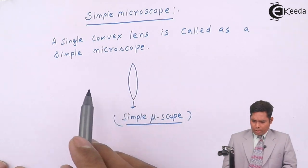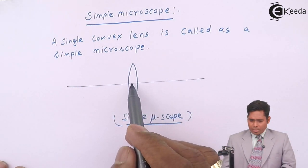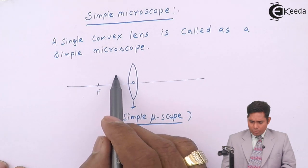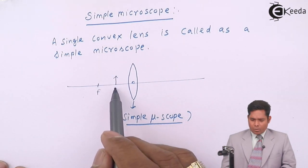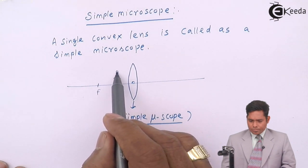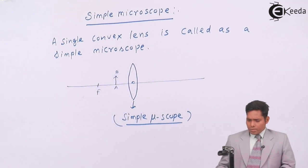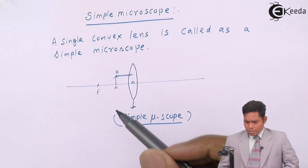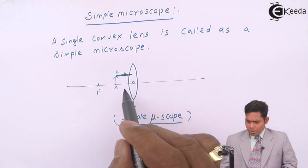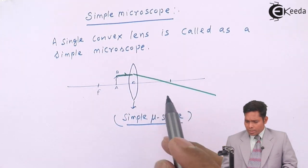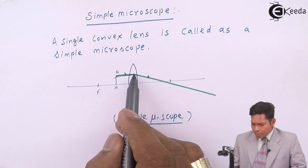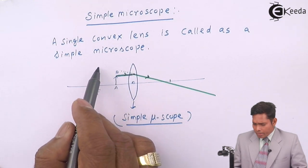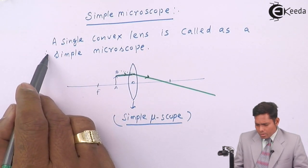For example, suppose this is the optical center and this is the focus. I place an object within the focus — I call this object AB. I will draw the image this way, and the ray will pass through the focus. This distance will be the same, and because of refraction, the ray will pass through this side. If I extend this ray in the backward direction, it will go like that.